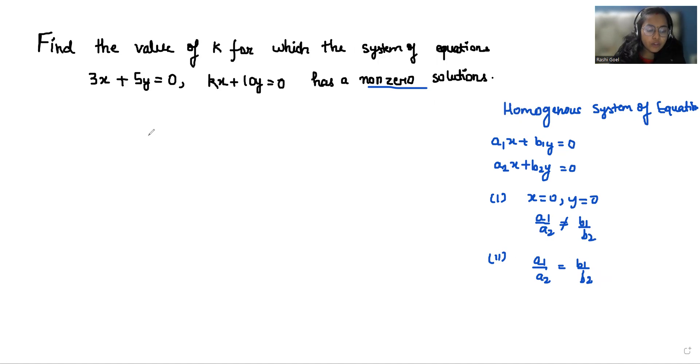The given equations are in the form of a1x plus b1y equals 0 and a2x plus b2y equals 0. So if we compare this with the first equation, a1 is 3 and b1 is 5. And if I compare with this equation, a2 is k and b2 is 10.